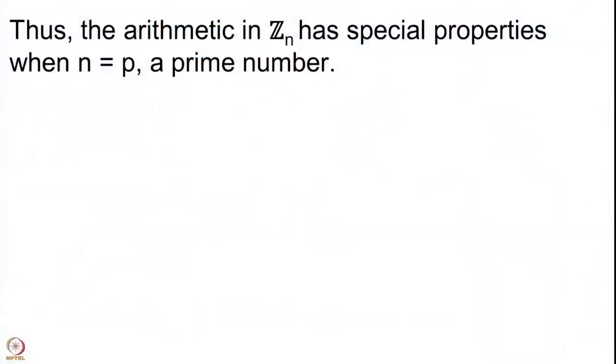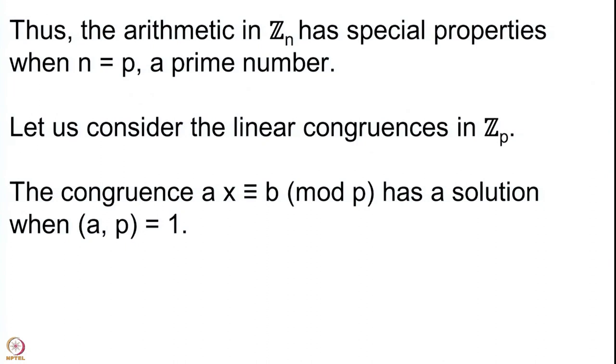This tells us there is something very special about arithmetic in Zp. For linear congruences modulo a prime p: the congruence ax ≡ b mod p has a solution whenever gcd(a, p) = 1. In Zp, only 0 fails to have gcd = 1 with p; all other nonzero elements have gcd 1 with p. Therefore ax ≡ b mod p has a unique solution whenever a ≢ 0 mod p.